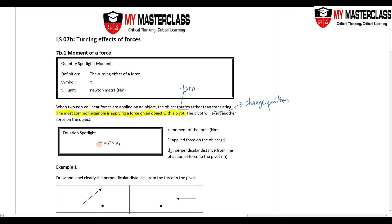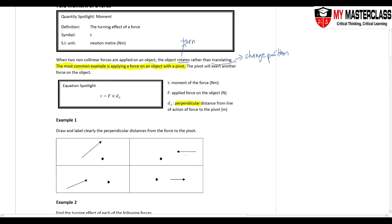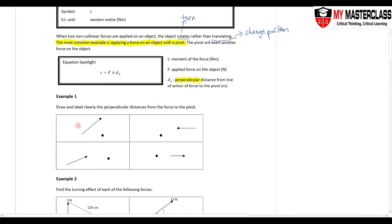The amount of moment you have is the force times the perpendicular distance from the force to the pivot. Perpendicular is very, very important. The more moment there is, the easier it is for the object to turn. So let's look at how to find the perpendicular distance for each case.